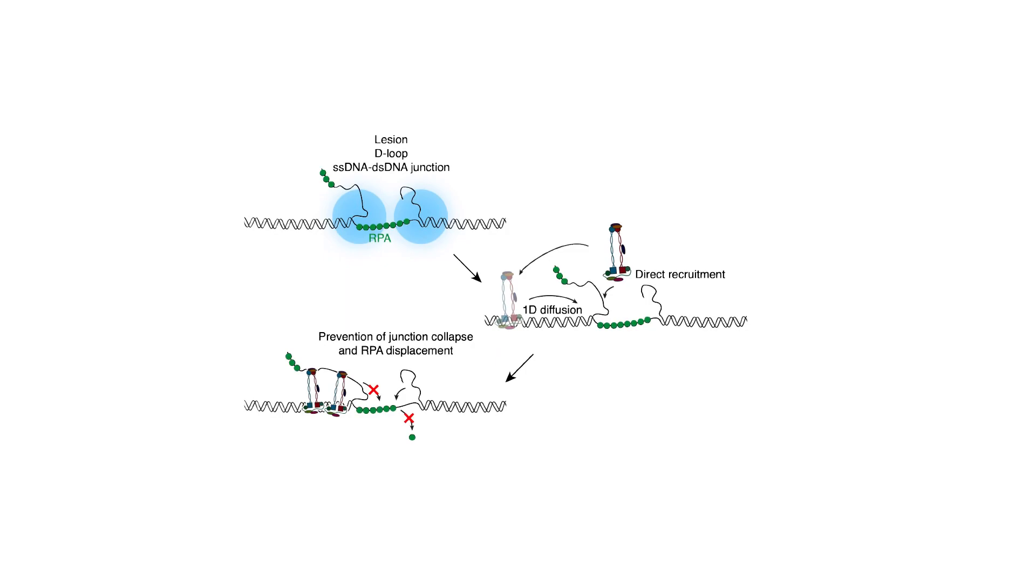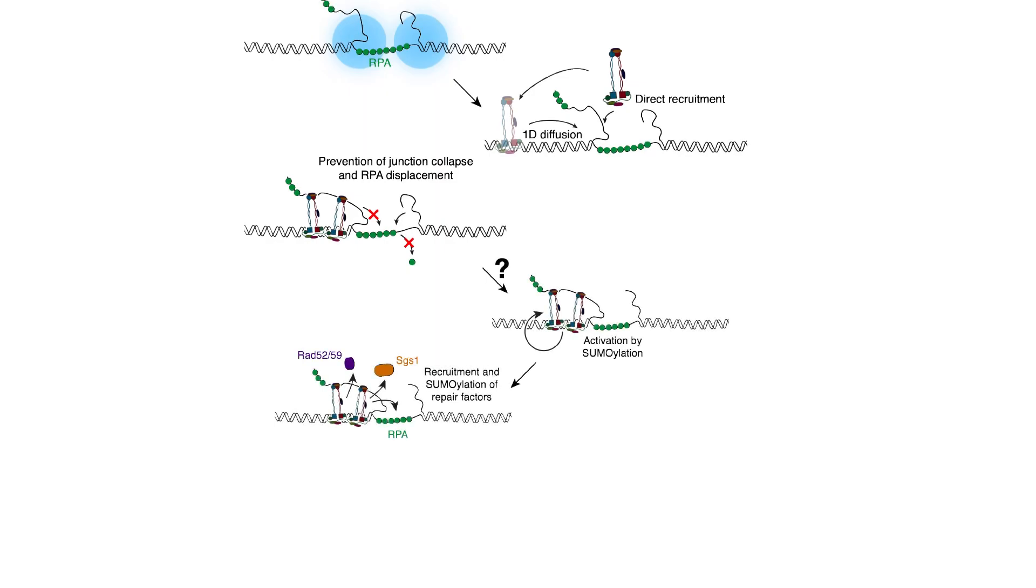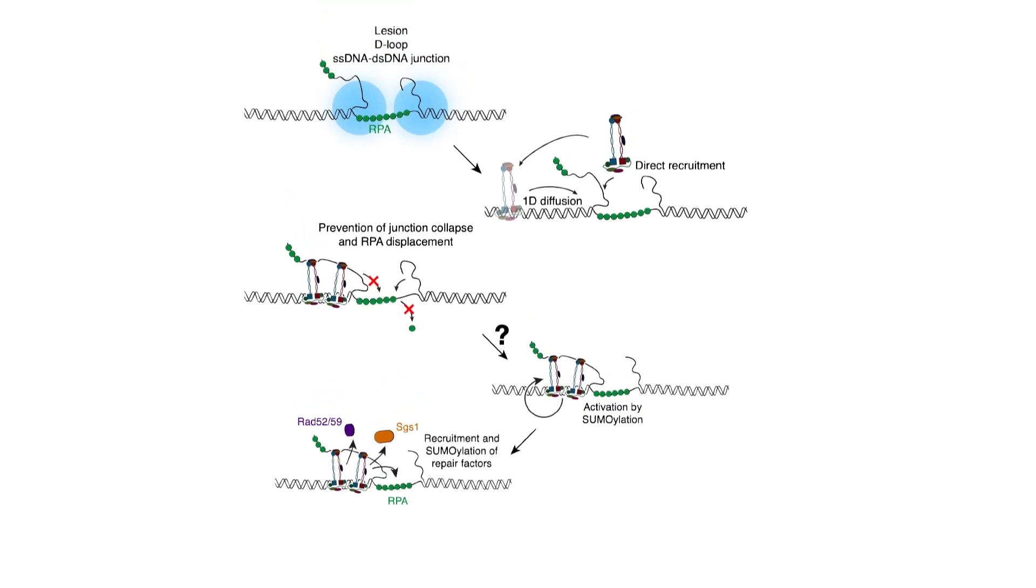And we then think that SMC56 holds onto these junctions in a manner that is still not known, but nevertheless, it prevents the collapse of these junctions by grabbing both the double-stranded and the single-stranded parts and prevent the displacement of RPA from these substrates. And as a second step, we speculate that this then will lead to the activation of SMC56 through a SUMO subunit and later on through the activation of downstream factors such as SGS1 and RAD52 or 59.